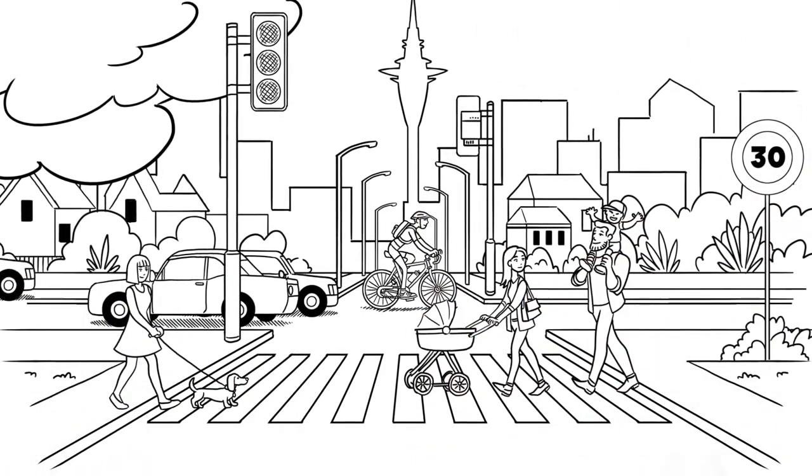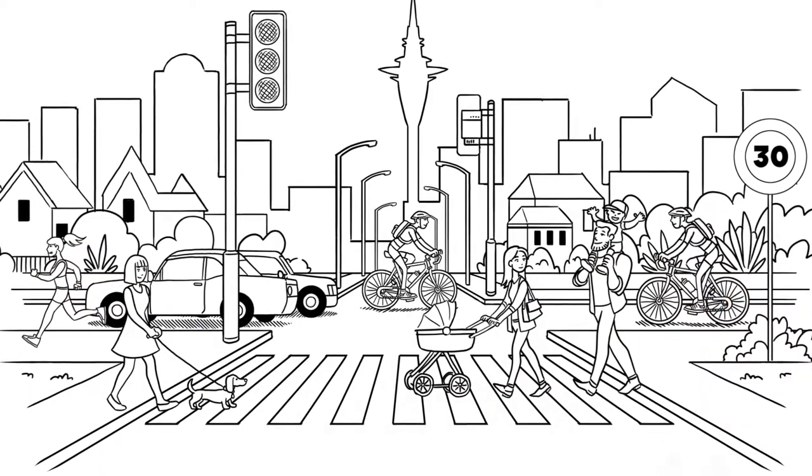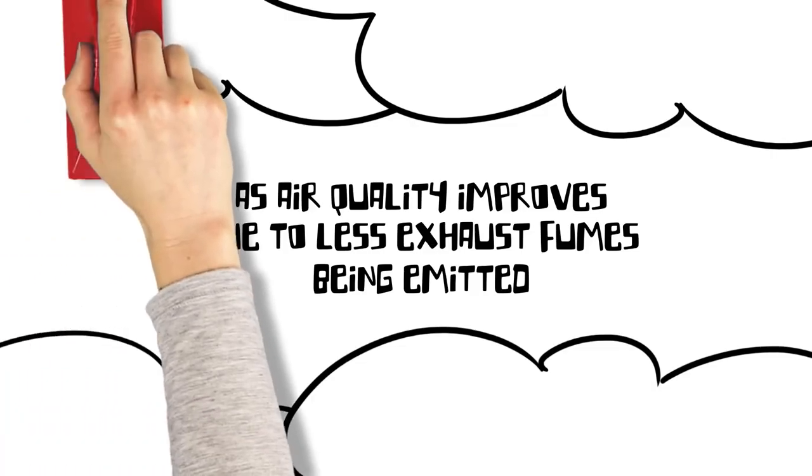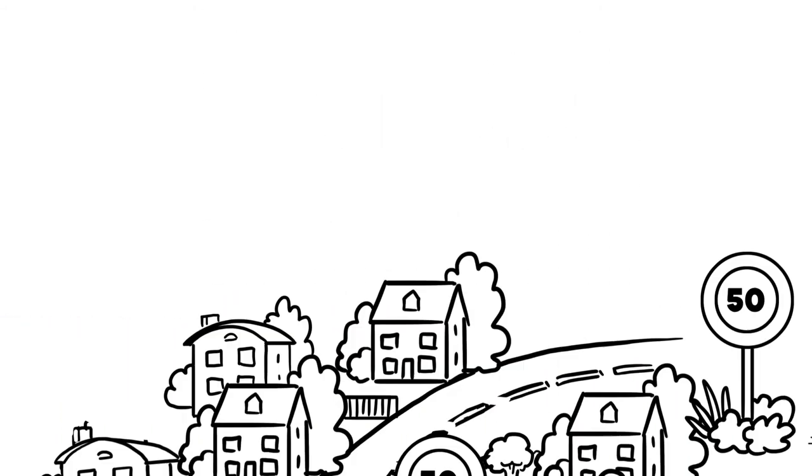And reducing traffic to 30 kilometres an hour on some of our streets outside the schools and in some town centres can have an immediate effect on the health of the residents as air quality improves due to less exhaust fumes being emitted.